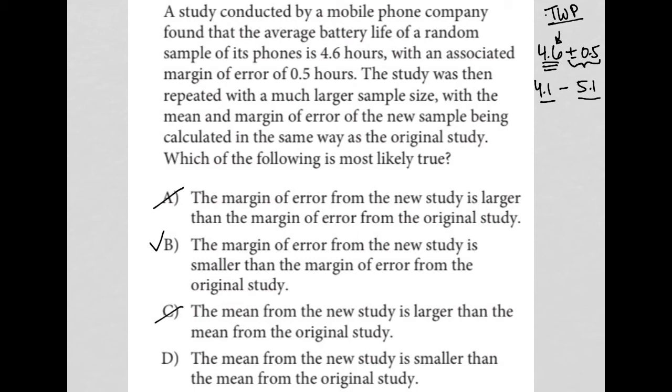Choice D, the mean from the new study is smaller. So yeah, there's nothing about the new study that tells me the mean should be different. The mean will most likely be the same because I'm assuming they're talking about this mobile phone company is looking at their phones. So looking at the exact same phones just over a larger sample size, we should really just see the margin of error decrease. So if I'm checking out 100 phones versus a million phones, that margin of error should get smaller.